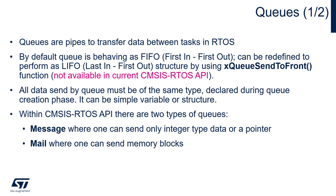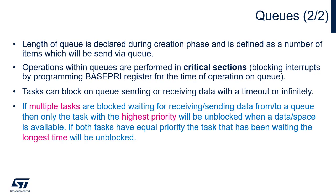The data can be a simple variable like a char, integer, or long, or it can be a structure. Within CMSIS RTOS API there are two types of queues: the message queue, where you can send integer data, a pointer, or a structure; and mail, where you can send memory blocks. We will focus on the message queue. The queue length is declared during creation and is defined as the number of items. Queue operations are performed in critical sections using the base priority register, ensuring no other tasks or interrupts operate on the OS during queue operations.